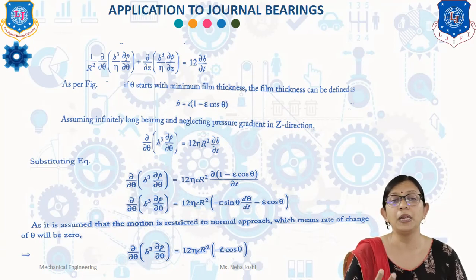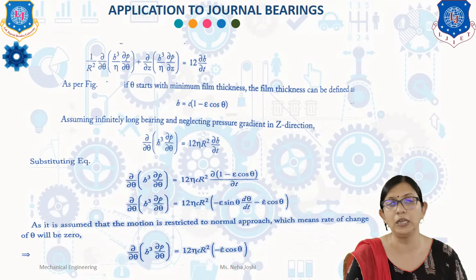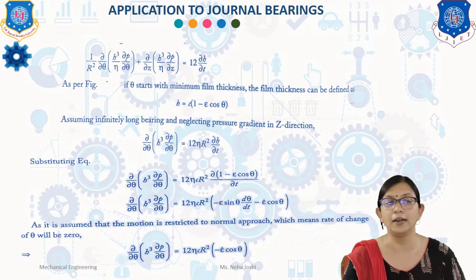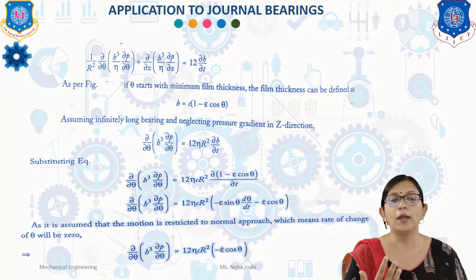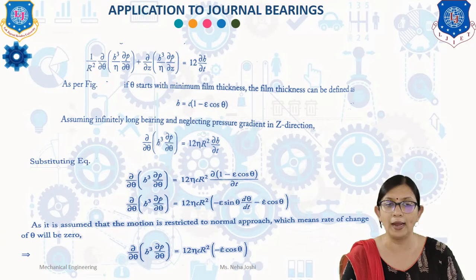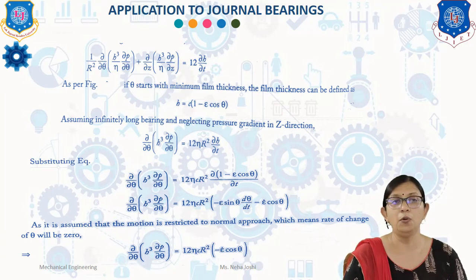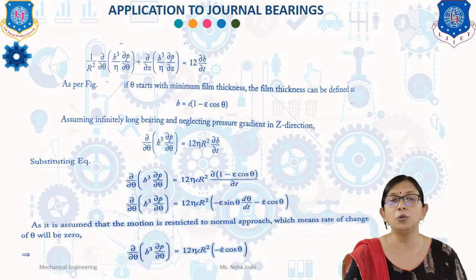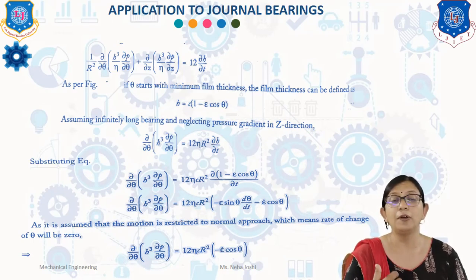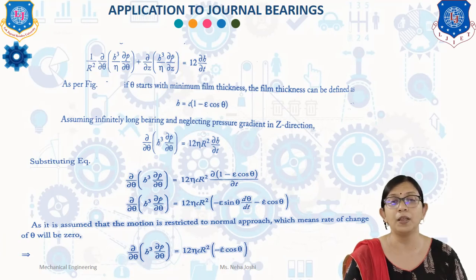As per the figure, if theta starts with minimum, the film thickness is defined as h = c(1 − ε·cos θ). Assuming an infinitely long bearing and neglecting the pressure gradient in the z-direction, we get: (∂/∂θ)(h³ · ∂p/∂θ) = 12η·r²·∂h/∂t. Substituting, we get: (∂/∂θ)(h³ · ∂p/∂θ) = 12η·c·r² · ∂(1 − ε·cos θ)/∂t, which simplifies to 12η·c·r²·(−ε̇·sin θ · dθ/dt − ε̇·cos θ).